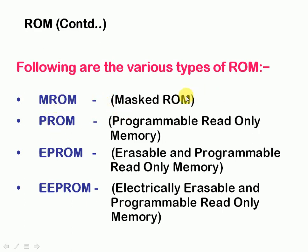MROM — Masked Read Only Memory — was the very first type of ROM. These were hard-wired devices that contained a pre-programmed set of data or instructions. These kinds of ROMs are known as Masked ROMs and are inexpensive in nature. They are an older version used in computer systems.